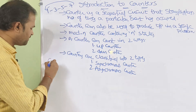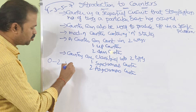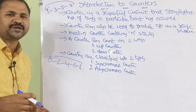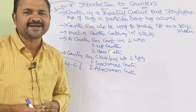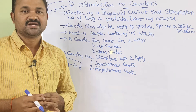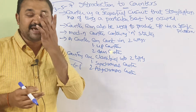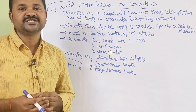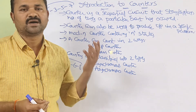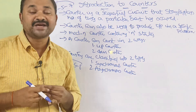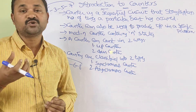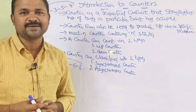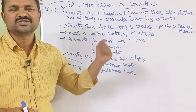Or we can have a pattern like 0, 2, 4, 6, 8. We can display output in any specific pattern with the help of counters. The best application for counters is in washing machines, ACs, or microwave ovens — in order to display the temperature and the time, we use counters.